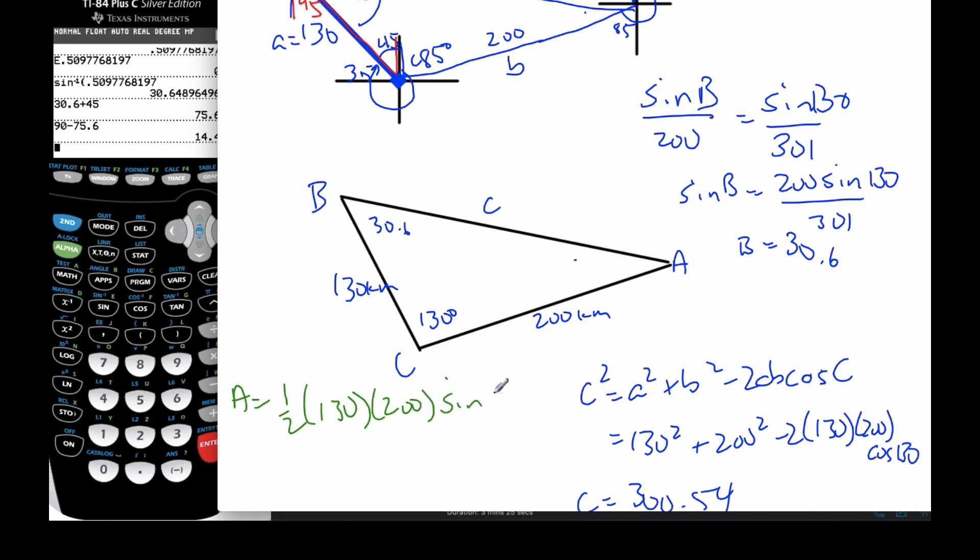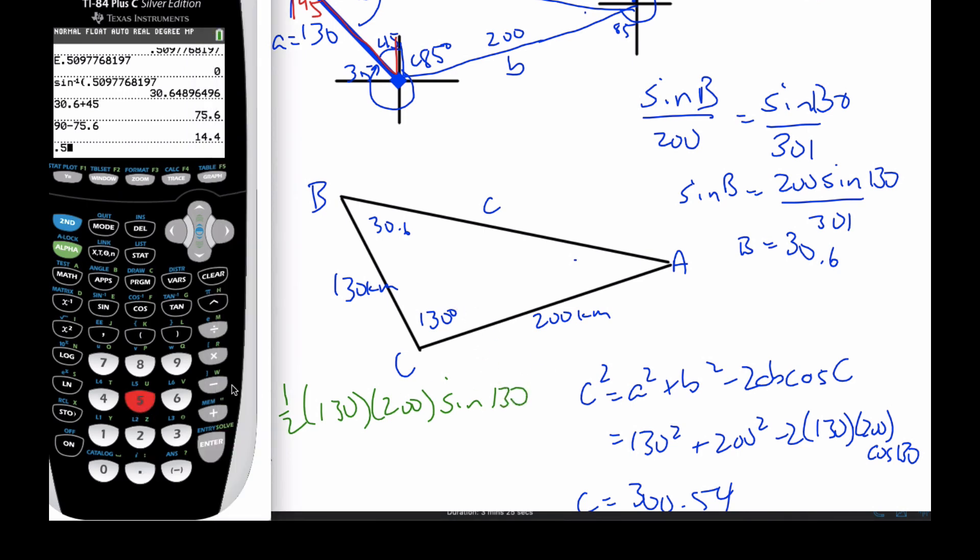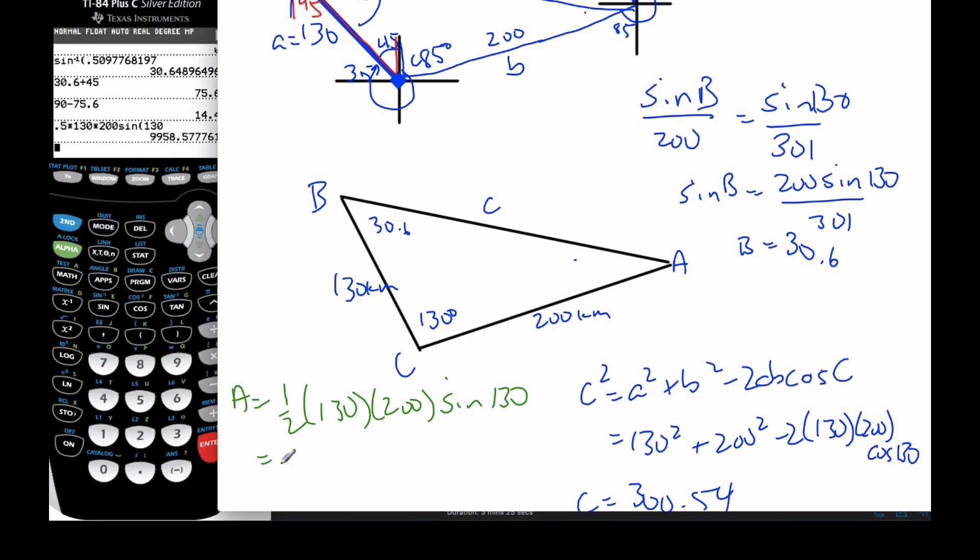And I just put this in my calculator. Times 130 times 200 gives me, times the sine of 130, gives me a value of an area. Oh, 9960 kilometers squared. This is to three significant figures. This always feels a little funny to me to round it off so much, but this is correct to three significant figures.